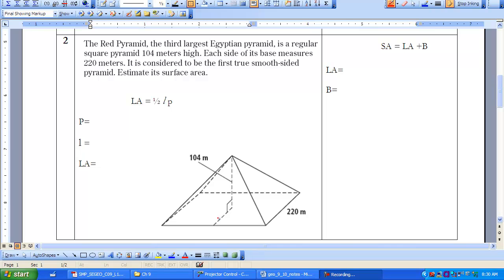So when we start out, just like we did with prisms and cylinders, I'm going to look at what I need for my formula. I need an L and I need a P. So for P, the perimeter of my base, we have four sides. It's a square and they're all 220. So that's going to be 220 times 4, which gives me 880 meters.